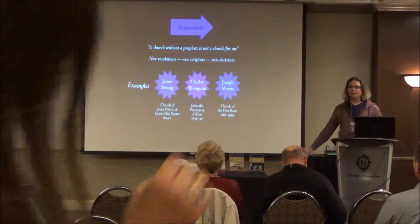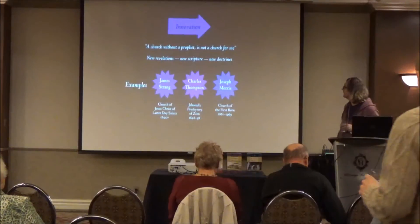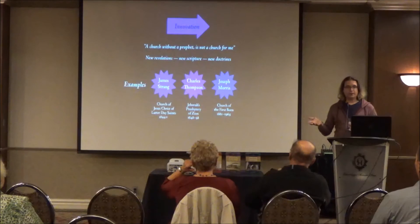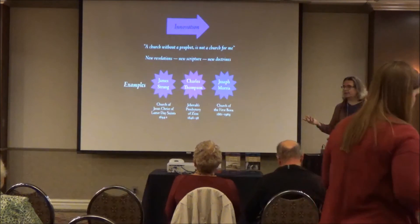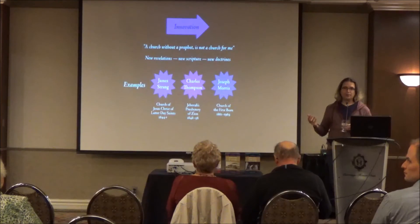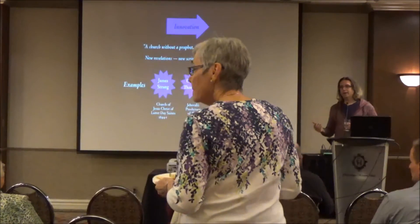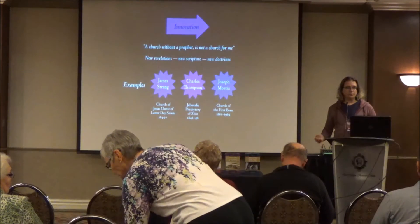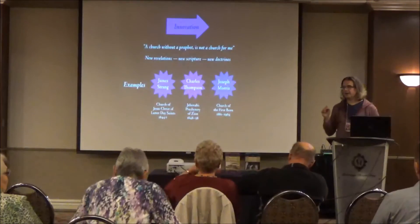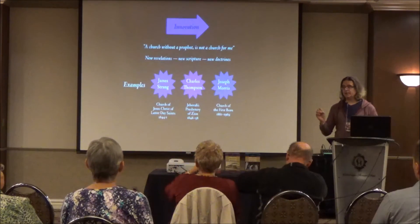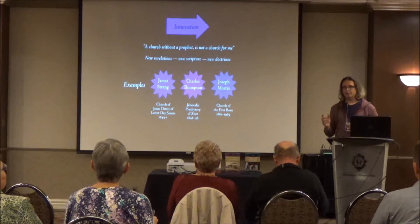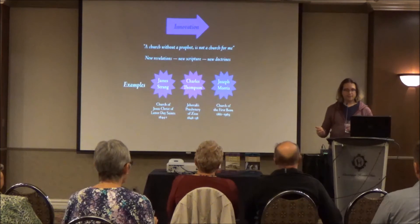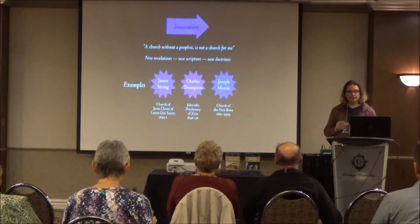After the break: we talked about one of the different strategies people have as their church tries to find direction. One of them is purification — peeling back the onion to get to the pure core they remember. Sometimes they can find a place, like the Bickertonites have, with a very interesting Kirtland-era style church. Sometimes you peel it back so much there's nothing left. Another way is continuation — the idea that the church has been evolving all along and you want to stay on that bandwagon.